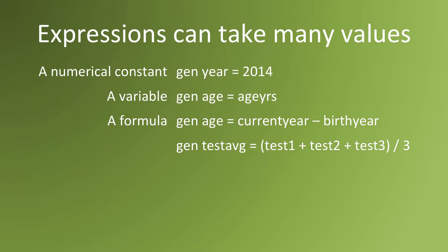Expressions can take many values. It can be a numerical constant. For example, if you type in gen year equals 2004, all of your observations will have the variable year with a value of 2004.